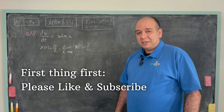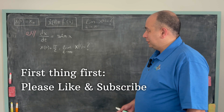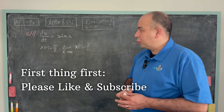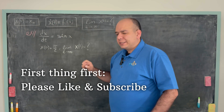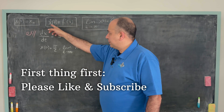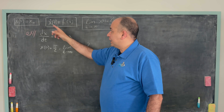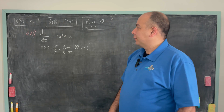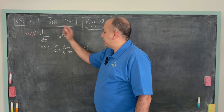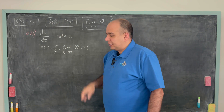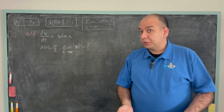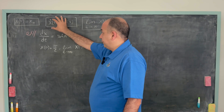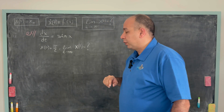Hi everybody, this is Arif. Today we will focus on first order differential equations given in this form. x is a function of t, and x-dot refers to the first derivative of x with respect to t. This derivative is given as a function of x.